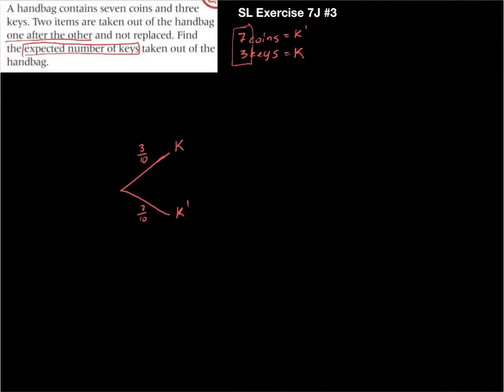Now we're going to pull out a second object. If the first one was a key, the second one could be a key or it might not be a key. But remember, I've already pulled out one key, which means that now there are seven coins and two keys. So now the probability of getting a key is only two out of nine, and the probability of not getting a key is now seven out of nine.